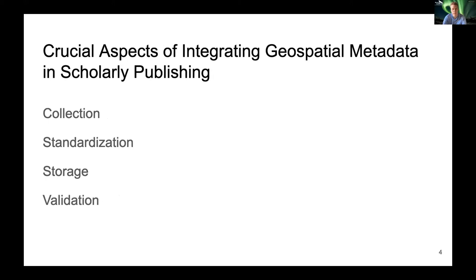To make geospatial metadata usable for the discovery of scientific articles, different aspects have to be considered. First of all, the data must be collected. There are two main opportunities to collect geospatial data of scientific articles. On the one hand, the scientific article — for example the text, content figures, and datasets — can be used as a database. An examination of the scientific article can capture information about location and time of the article's content.